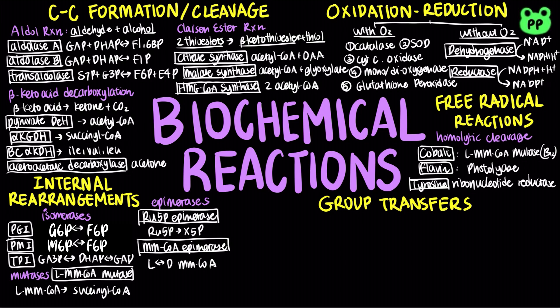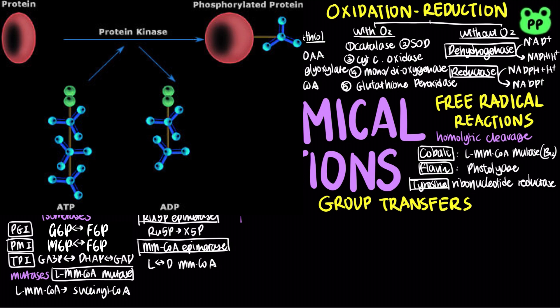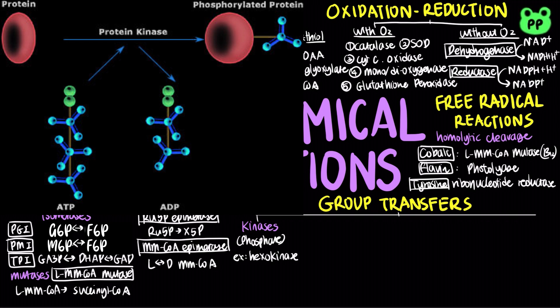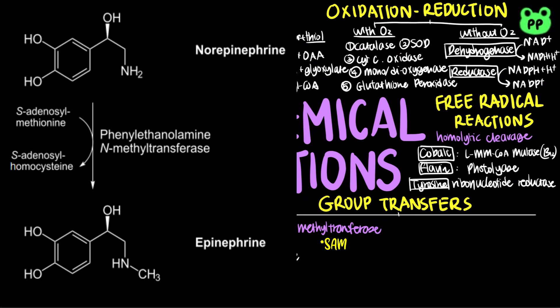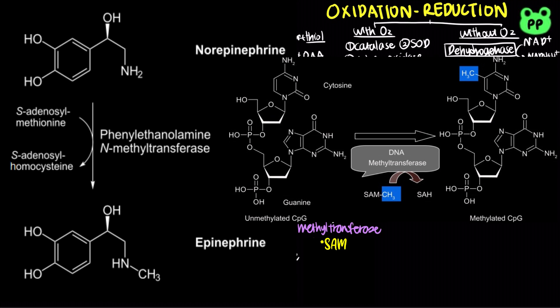Internal rearrangements involve intramolecular group transfers. The last type of biochemical reactions involves intermolecular group transfers, which are group transfers between two molecules. Kinases catalyze the transfer of a phosphate group from the high-energy molecule ATP. Examples include hexokinase from glycolysis and protein kinases A, B, C, and G present in signal transduction pathways. Methyltransferases catalyze the transfer of methyl groups, which use S-adenosylmethionine as the methyl donor. They convert norepinephrine to epinephrine and also methylate DNA and RNA.